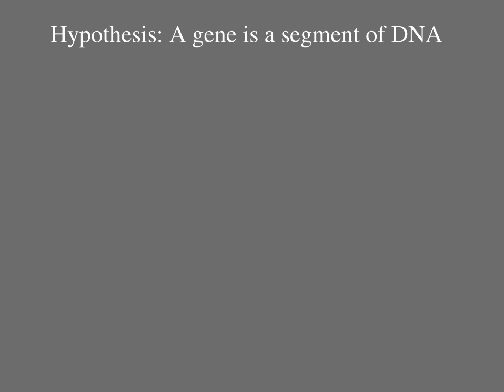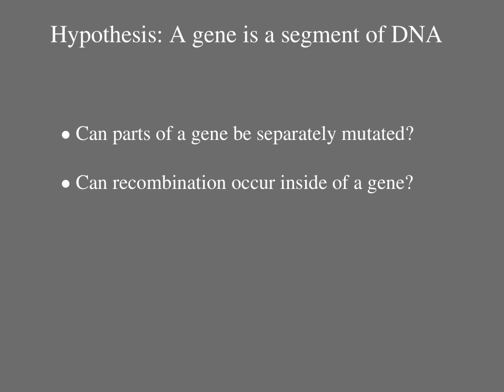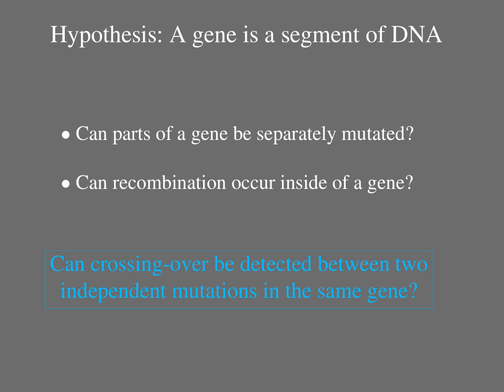Benzer's experiments asked two questions. First, can parts of a gene be separately mutated? The alternative is that an entire gene is either mutant or normal. Second, can recombination occur inside of a gene? The alternative is that recombination can occur only between genes. Benzer devised an experimental system that enabled him to detect crossing over between two independent mutations in the same gene.